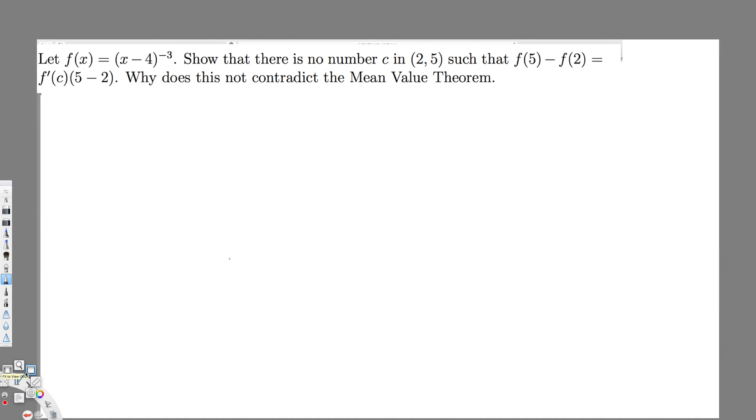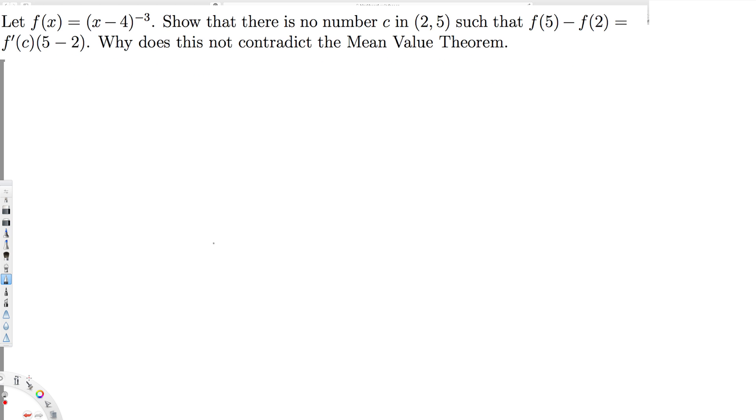Let's do this problem. The question is asking: let f(x) equal (x minus 4) to the minus 3. Show that there is no number c in (2, 5) such that f(5) minus f(2) equals f'(c) times (5 minus 2).